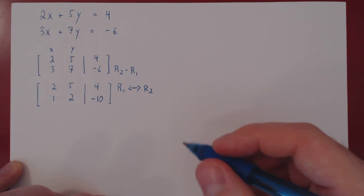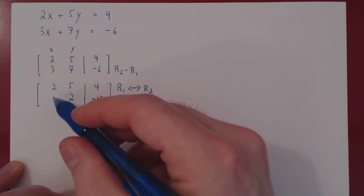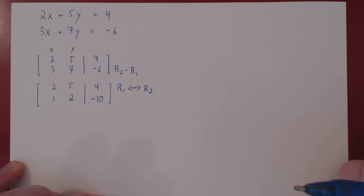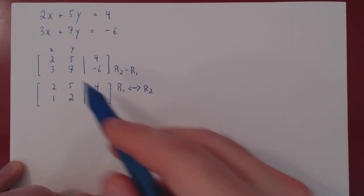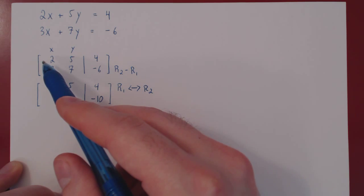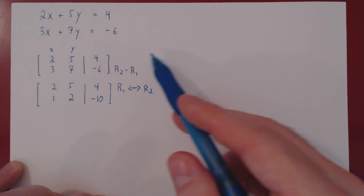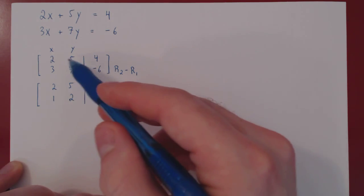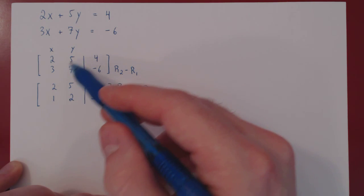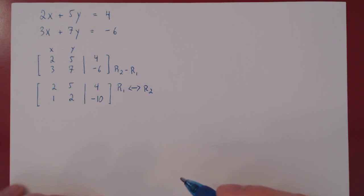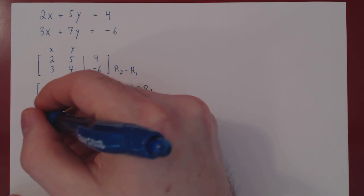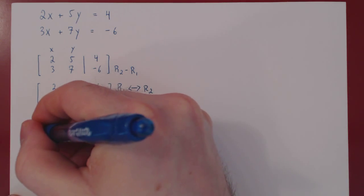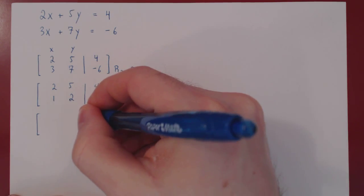So we simply now swap row one and row two — we interchange them. Notice that we then obtain our leading one in the top row in two operations instead of one, but we do a little more work to avoid the introduction of the five-halves. This is really important, especially for larger systems. So let us swap the two rows.